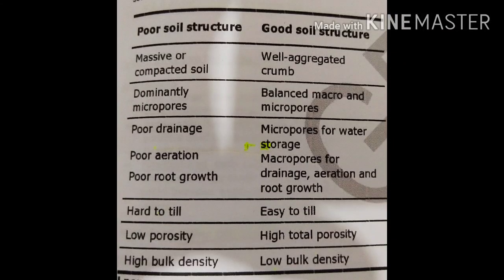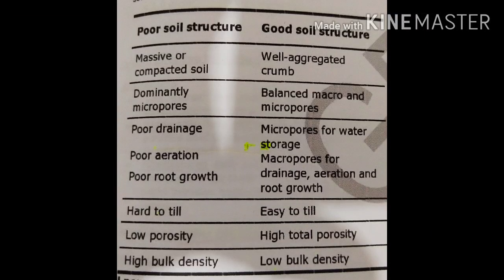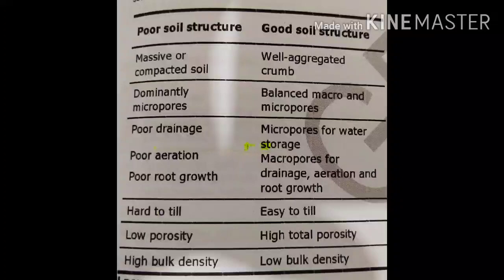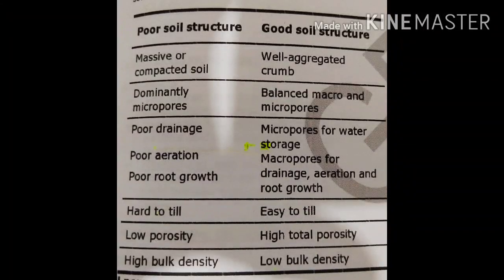They are inversely related. Poor soil structure has dominantly micropores, while good soil structure has balanced macro and micropores. Poor soil structures have poor drainage, poor aeration, and poor root growth, while good soil structure has micropores for water storage, macropores for drainage, aeration, and root growth. Poor soil structure is hard to till, while good soil structure is easy to till. Poor soil structure has low porosity and high bulk density, while good soil structure has high total porosity and low bulk density.